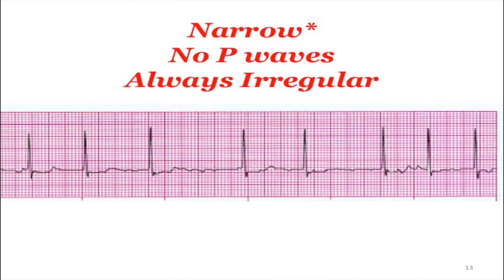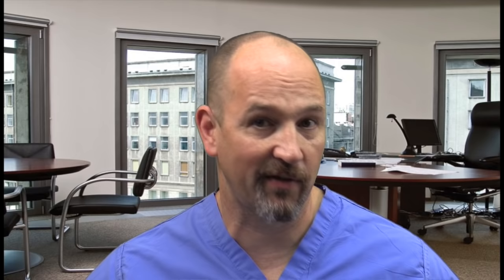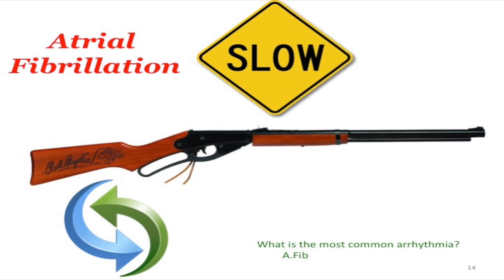Atrial fibrillation: the diagnostic criteria is narrow complex — an asterisk because for boards it will be narrow, but clinically it can be wide — no P waves, and always irregular. You need to recall that instantly. With AFib, there are three things to think about for treatment: slow it down if it's greater than 100, prevent embolization, and then ask can I convert it back to sinus rhythm? AFib is the most common arrhythmia.